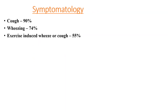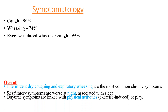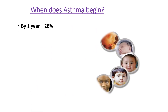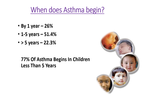The most common symptoms seen in asthmatic children include cough, followed by wheezing and exercise-induced wheeze or cough. Overall, intermittent dry coughing and expiratory wheezing are the most common chronic symptoms of asthma. Respiratory symptoms are worse at night, especially with sleep, while daytime symptoms are linked with physical activity or play. Asthma develops by 1 year of age in 26% of asthmatic people, by 51% at age 5 years, and 77% of asthma begins in children less than 5 years.